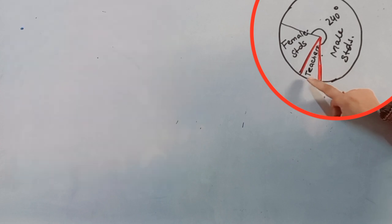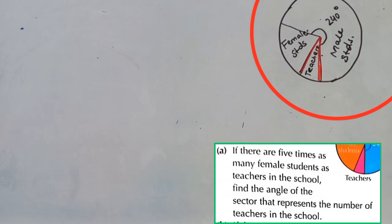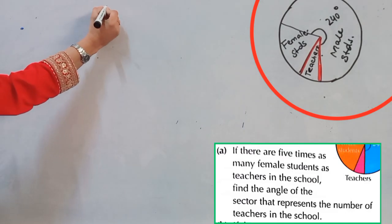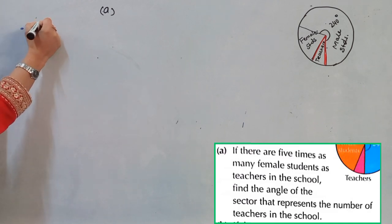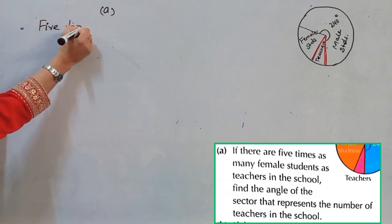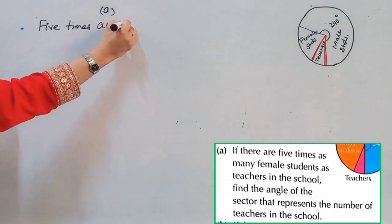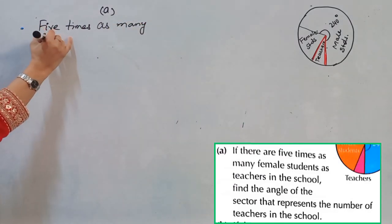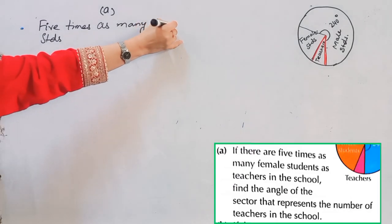They are giving us information that female students are five times the number of teachers. We don't know the number of teachers either, so let's start the solution. Female students are five times the teachers, but we don't know the teachers.